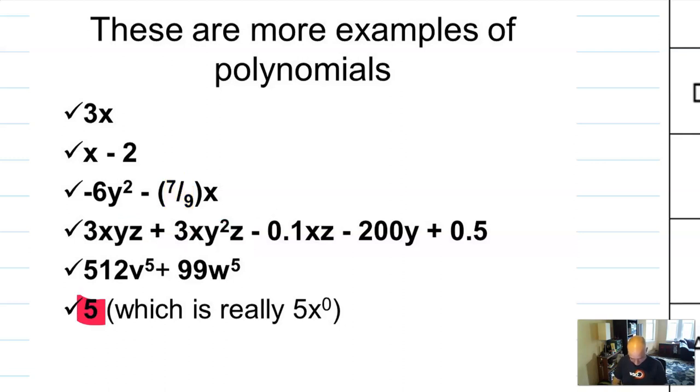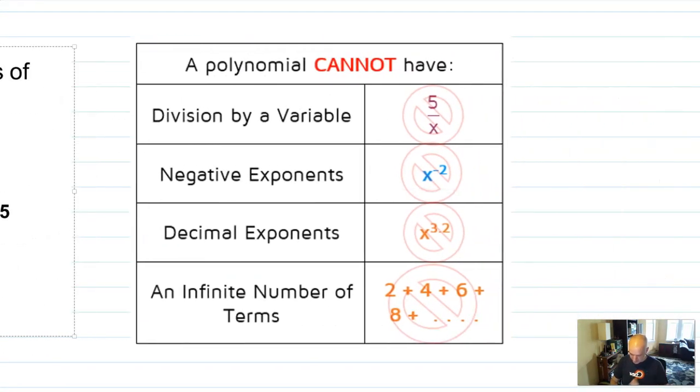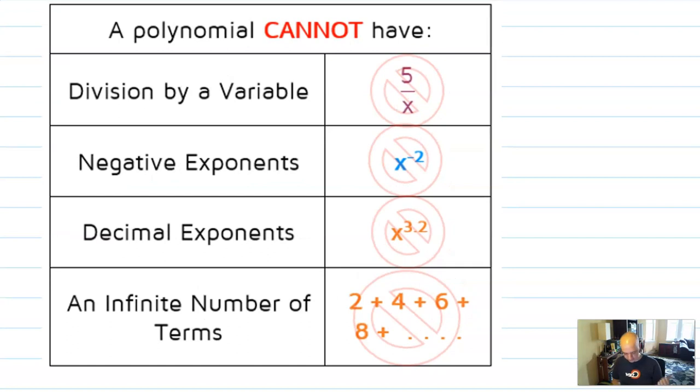And you can, of course, have single numbers or constant terms. Here are kind of the rules about what cannot be considered a polynomial. You can't divide by a variable. You can't have negative exponents, which are kind of the same thing. You can't have decimal or fractional exponents.